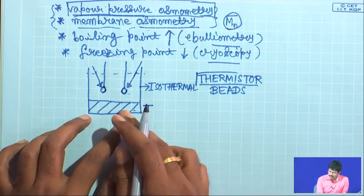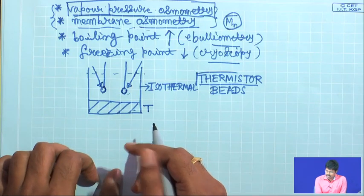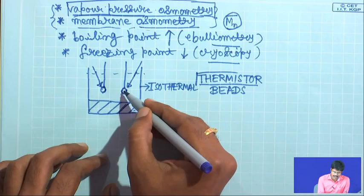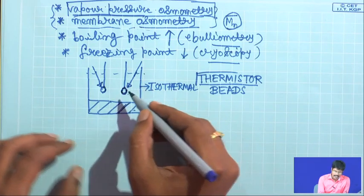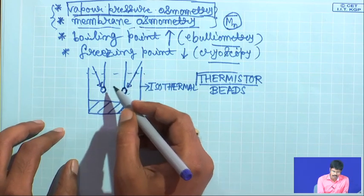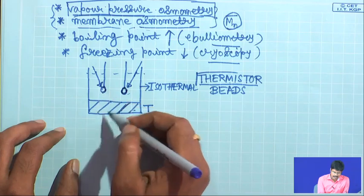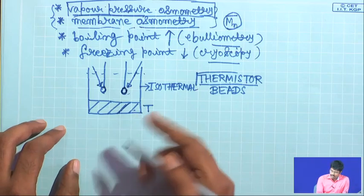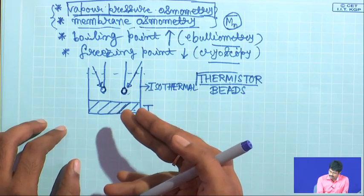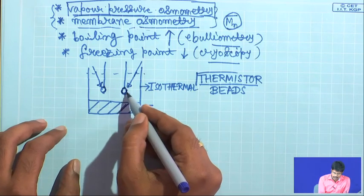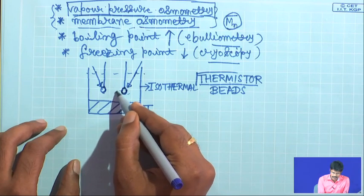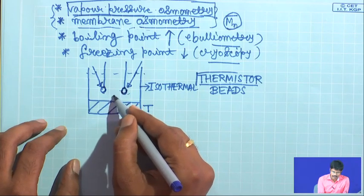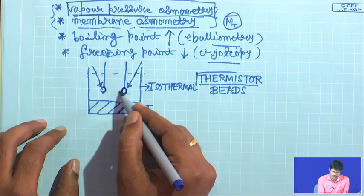The solvent is at temperature T, in equilibrium with its vapor. What you do is put a small drop of the solvent on one bead using a syringe, and put a small drop of a solution of the polymer — the average molecular weight of which you want to measure — on the other bead. Now, the solvent vapor is in equilibrium with the liquid phase, so no net condensation or evaporation of solvent occurs from the solvent drop.